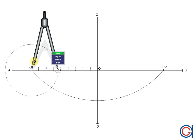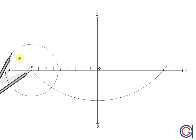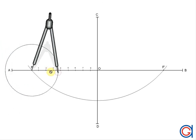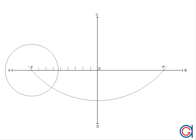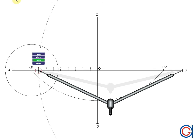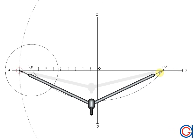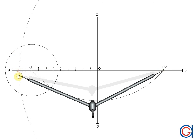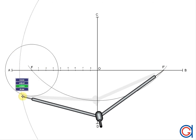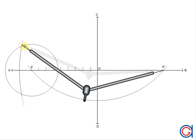Now, we are going to set the compass to the length A1, and with this radius, we set our compass on the focal point F and draw a circle. Now, we set our compass to the length B1, and with this length, we set our compass on F' and scribe two arcs on the previously drawn circle, which we will call 1A and 1B, as can be seen here.